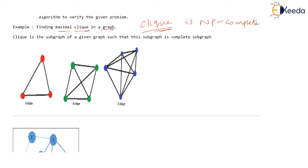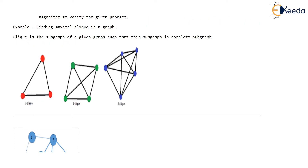Consider a graph with three vertices — it is a complete graph. Recall that a complete graph is one in which every vertex is connected to every other vertex with an edge. You can clearly see that every vertex is connected to all other vertices. Now, you have to find a subgraph of this graph which is itself a complete graph. This graph itself is complete — it is a three-vertex complete graph. Such a complete graph is known as a clique.